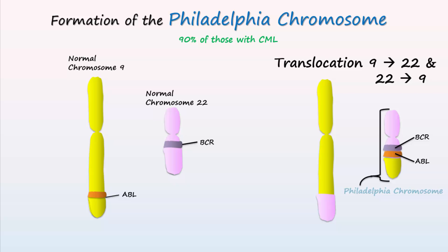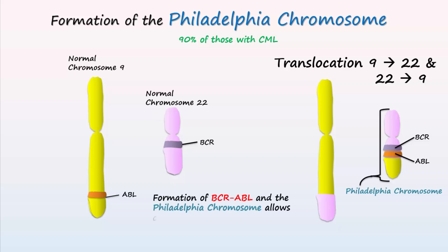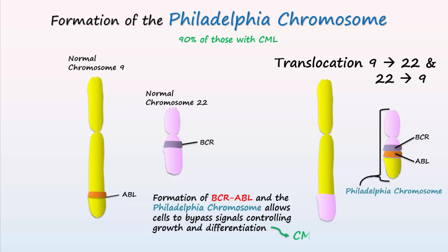BCR-ABL codes for a protein that allows affected cells to bypass the regulatory signals controlling normal cell growth and differentiation, thus resulting in malignant transformation to become leukemic cells, which causes the pathogenesis of chronic myelogenous leukemia.